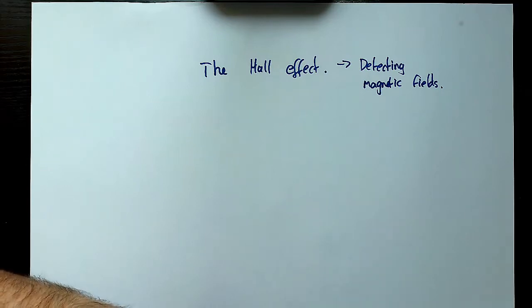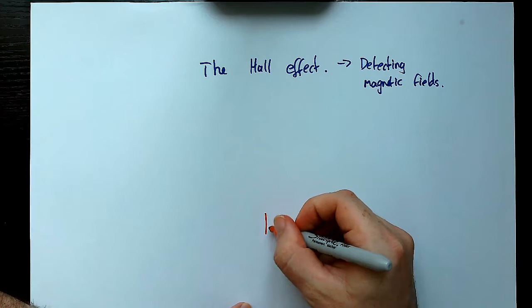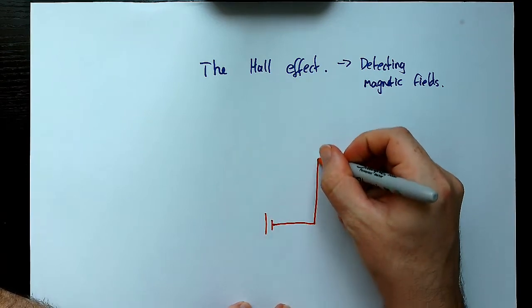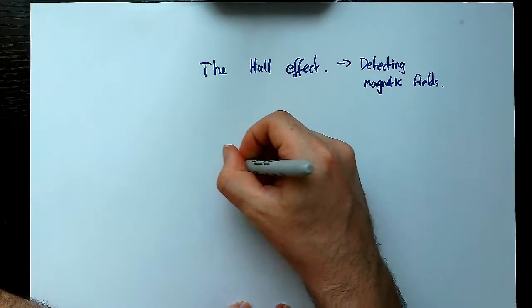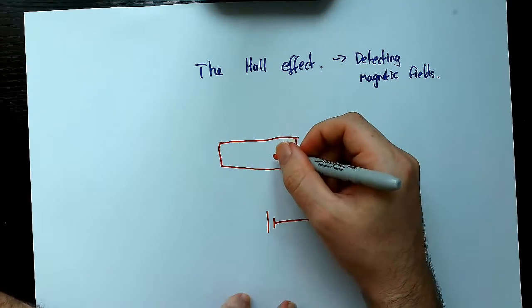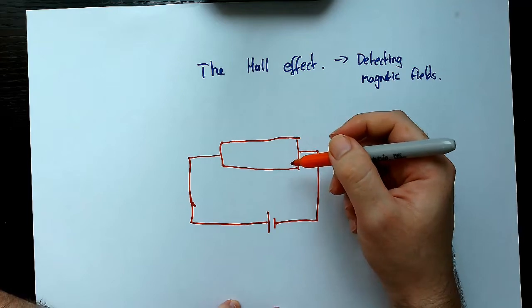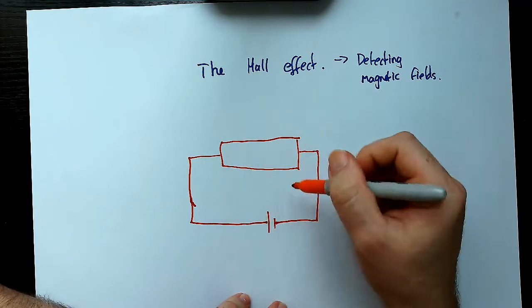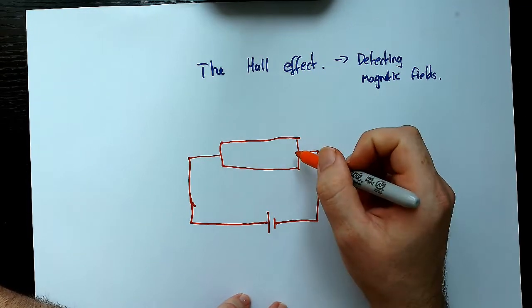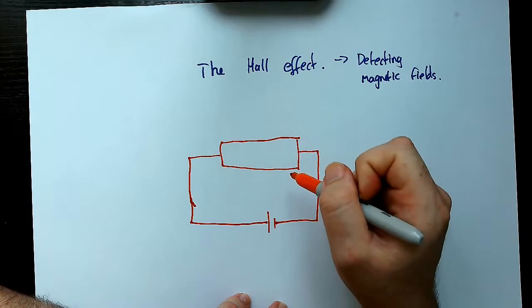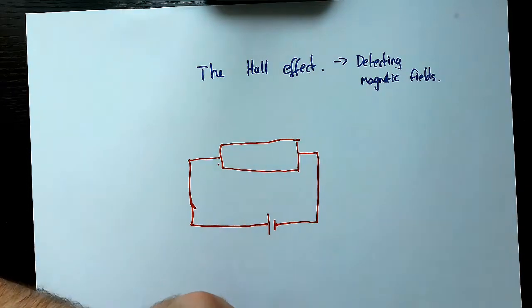So say for example, let's have a look at how a sensor is actually made up. So we start out with a circuit, and within that circuit there is a conductor. But that conductor, obviously we've got our electrons flowing from negative to positive. They're going to be flowing across in that direction.